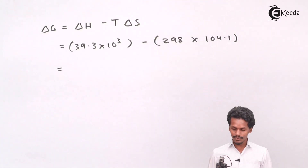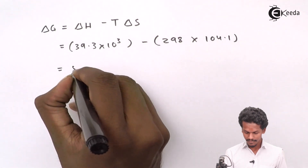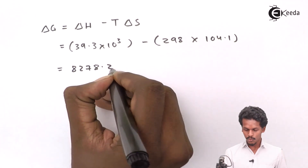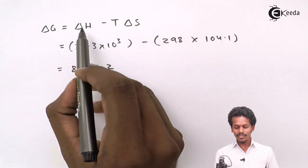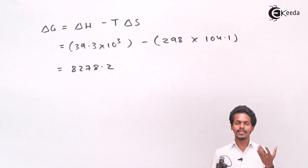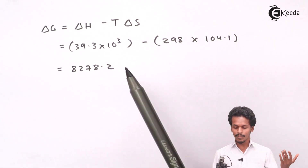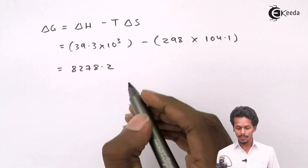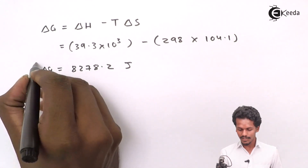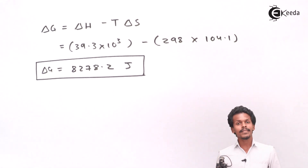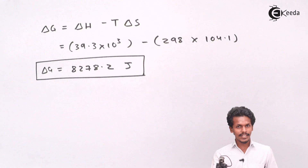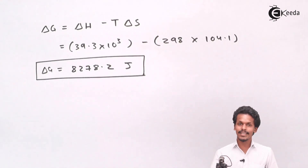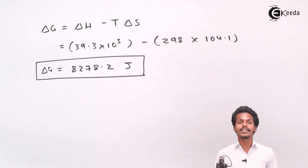Solving this, we get ΔG = 8278.2 joules. Since enthalpy is in joules and T×ΔS is also in joules, the overall answer is in joules. The value of ΔG is positive, which indicates that the reaction is non-spontaneous. This is how we calculate the Gibbs free energy change — it is very easy to solve.